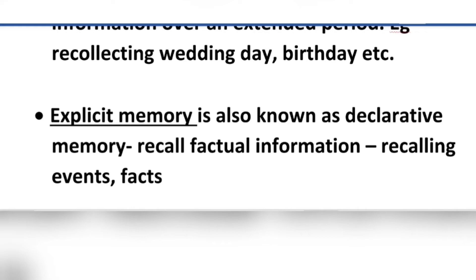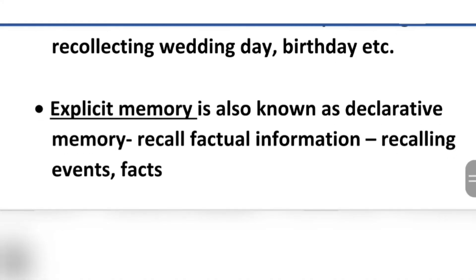Long-term memory is classified into explicit and implicit memory. Explicit, or declarative, memory involves recalling factual information and events. Implicit, or non-declarative, memory is the other major division. So long-term memory is divided into explicit and implicit.